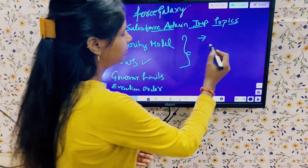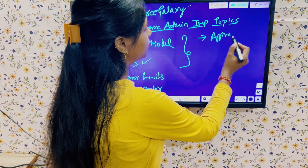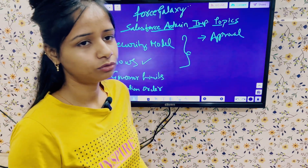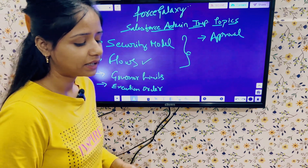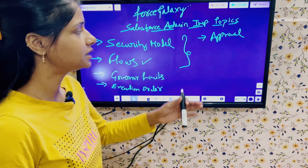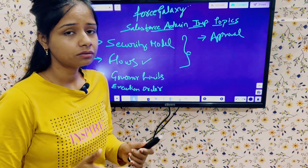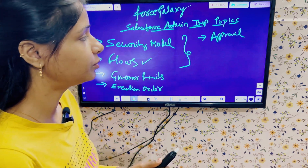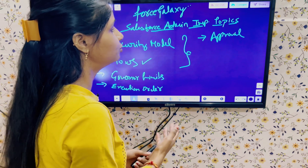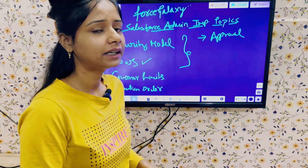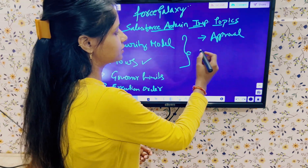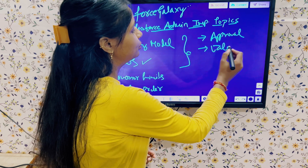The next topic is approval processes. Approval process is not a very big topic — it is another automation tool used when we require approvals or want to follow some hierarchy. In this topic you must be aware about when to use approval processes, what they are used for, and what tasks we can perform using them. Next we have validation rules.